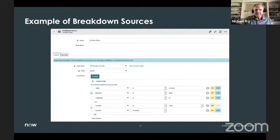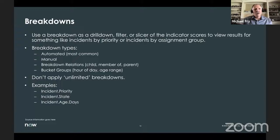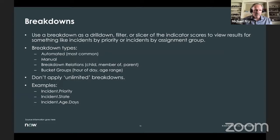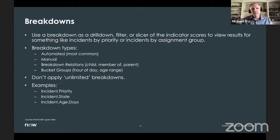Breakdowns are a way to slice your indicator data. For instance: today we opened 50 tickets — I want to see how many were priority ones, how many were priority twos. You apply that breakdown and it shows you the data instantly on your indicator. The most common breakdown types are automated, manual, breakdown relations (child, member of, parent), and bucket groups. Bucket groups let you define ranges — like tickets open between one and two days, three and five days, five and ten days, then greater than eleven days — and the system automatically categorizes tickets into those buckets.